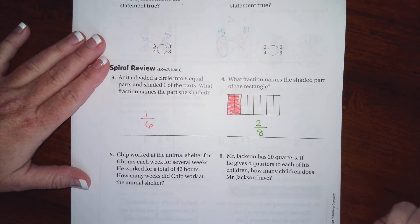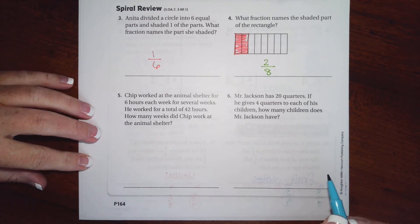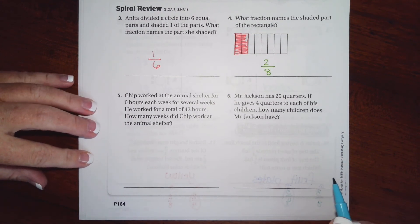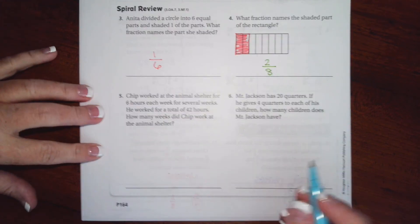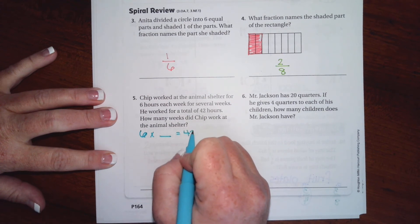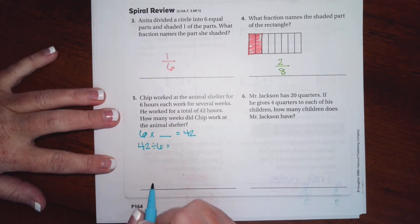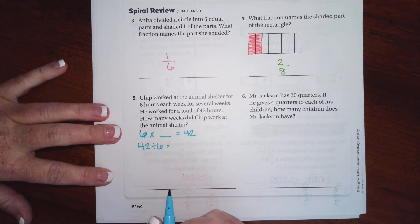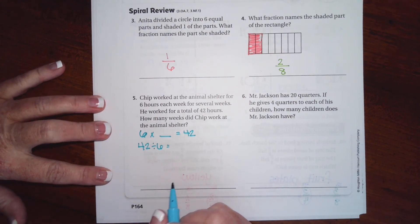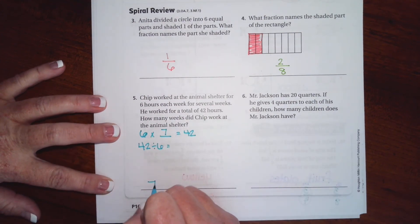We're going to go down to number five. It says Chip works at the animal shelter six hours each week for several weeks. Chip works a total of 42 hours. How many weeks? So six times blank is 42, or 42 divided by six. Again, if you guys don't know your multiplication chart, you need to. So find a way that helps you to remember what they are and get on it guys. So I know that six times seven is 42, so it's going to be seven weeks.